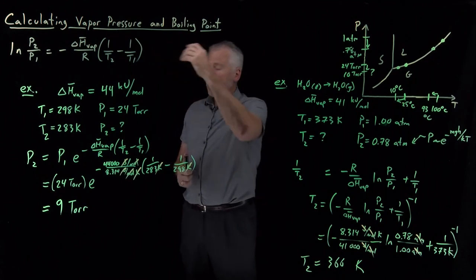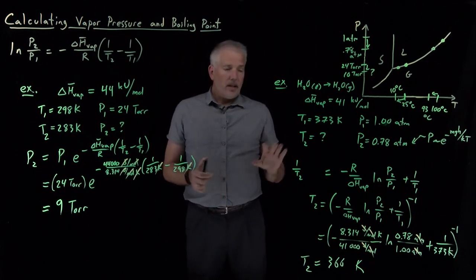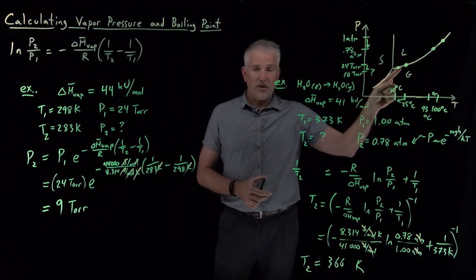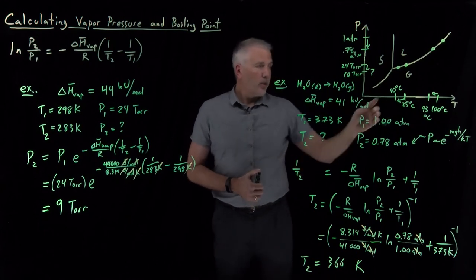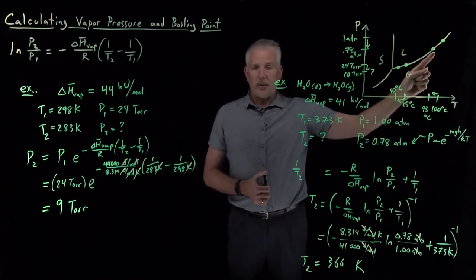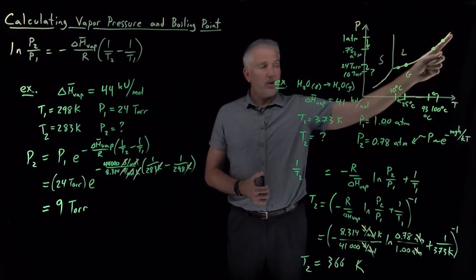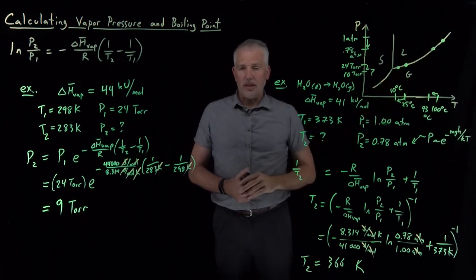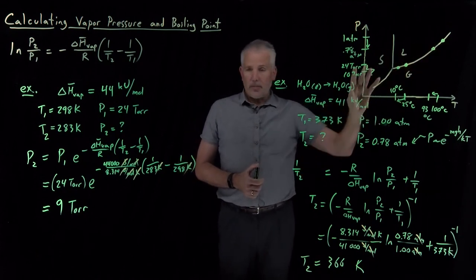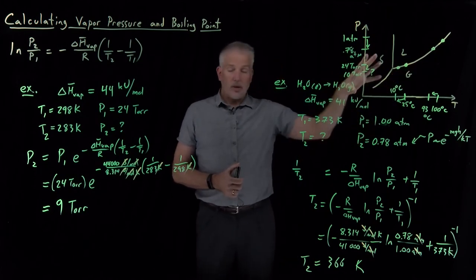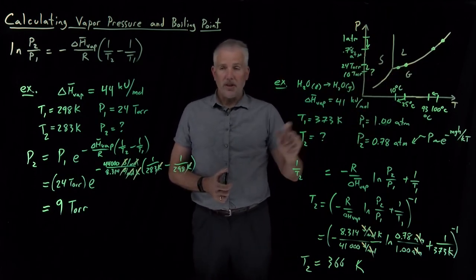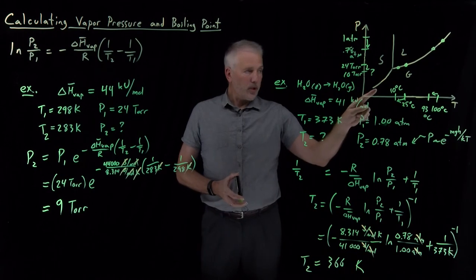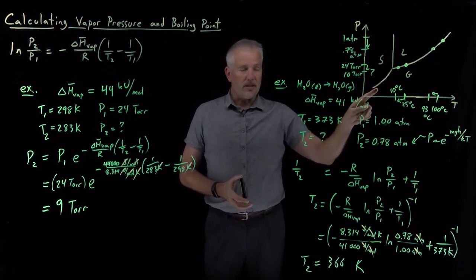So the Clausius Clapeyron equation can allow us to do calculations. Both of these are the same thing. They're just telling us how P1 and T1 change to P2 and T2 as we slide along this coexistence curve. We can phrase that in terms of how the boiling point changes if I drop the pressure or equivalently if I were to increase the pressure, or we could phrase it in terms of how the vapor pressure changes as I increase or decrease the temperature. So we can do that for boiling points, vapor pressures. We can do it for increases or decreases. We could do it for substances other than water, as long as we know the heats of vaporization. So the Clausius Clapeyron equation is quite useful for this type of calculation, but remember we can only use it for the phase coexistence lines that involve the gas phase.